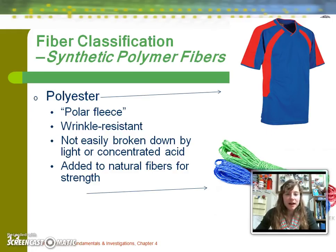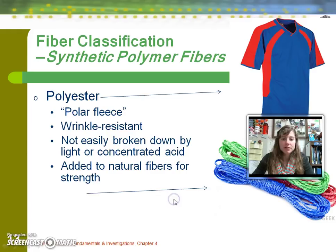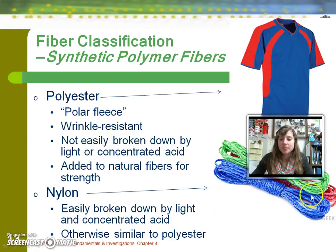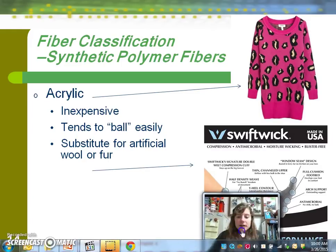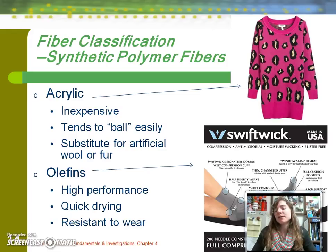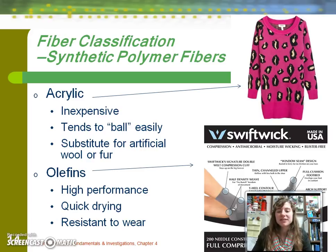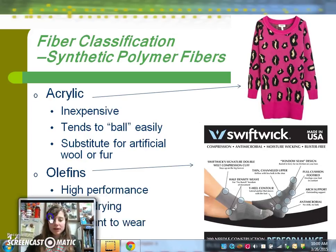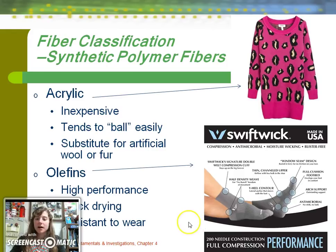Polyester — some of you may be wearing this now. It is wrinkle-resistant and in addition to jersey material, it can make up polar fleece. Another synthetic polymer fiber is nylon, which is really common and makes up rope, although it is easily broken down by light. Acrylic is also very common — it's usually a cheaper version that mimics the properties of wool, although it's often not as warm. And there's also olefin, a high-performance quick-drying material used in athletic socks.